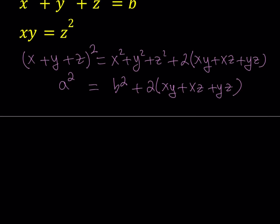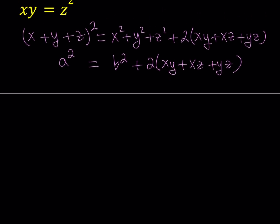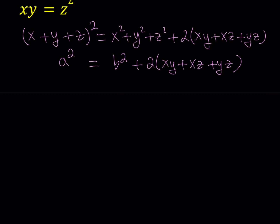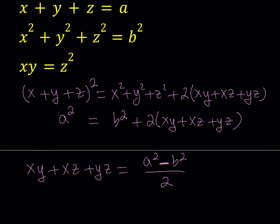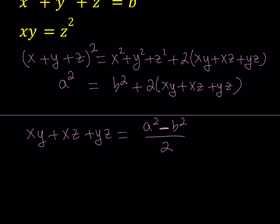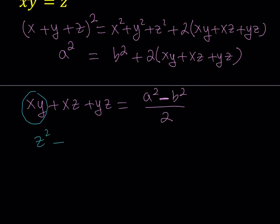I can subtract B squared and divide by 2, so that gives me XY plus XZ plus YZ equals A squared minus B squared divided by 2. Notice that in the problem the third equation involves XY, and we have XY in our sum, so we can replace XY with Z squared using substitution. So: Z squared plus XZ plus YZ equals A squared minus B squared over 2.